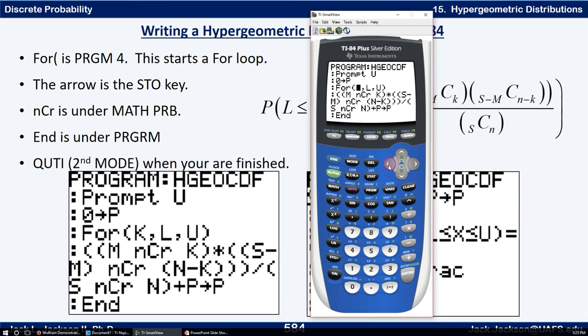So a couple things that you may want to check on putting this in. The for I've already said is program control number four. K of course is just alpha and then K comma LU and so forth. You know where NCR is I think by this point, but let's just go back and check that. So NCR remember is under math, left arrow to probability. NCR is number three. Okay, I think everything else is explanatory. The store, the store there is this STO key right down here. And the end is program and control number seven. So program and then seven.